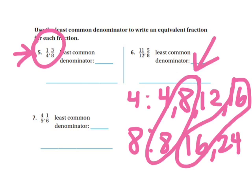Generally speaking, we want to find the least common denominator — that's the smallest denominator that they have in common. In this case it's 8. You could use 16, but it's just going to be a little bit more work, so generally we go for the least common denominator. In this case, it's 8.